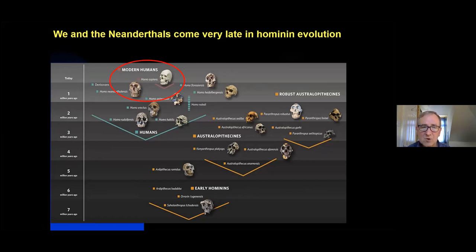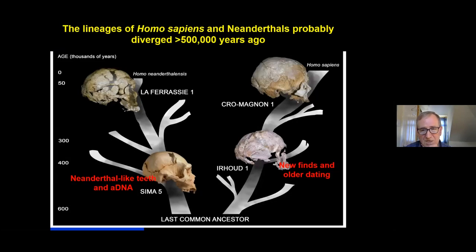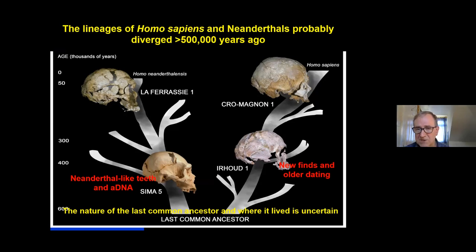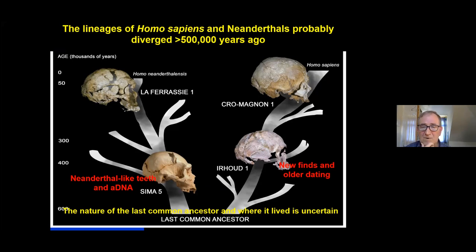We and the Neanderthals come very late in the human evolutionary story — perhaps seven million years of human evolution. Geneticists estimate we had a common ancestor with the Neanderthals perhaps 600,000 years ago. Just as we can trace the Sapiens lineage in Africa over probably 300,000 years, in Europe we can trace the Neanderthals back more than 400,000 years to the Sima de los Huesos material from Atapuerca in Spain. It now seems much less likely that Homo heidelbergensis or Homo rhodesiensis represents that common ancestor — the ancestor may have lived a bit further back in time, and we don't know whether it lived in Africa, Asia, or perhaps even Europe.